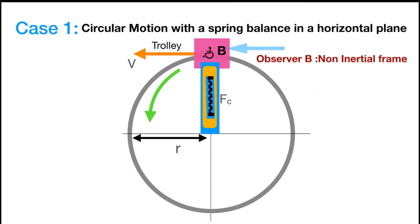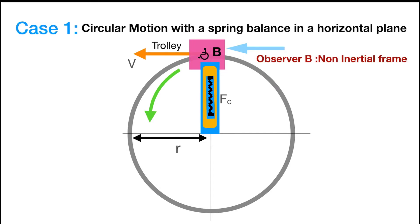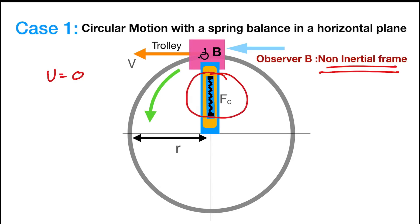Now let's understand the same motion from the perspective of observer B. Observer B is sitting inside the trolley and is also rotating with it, meaning he is under centripetal acceleration — he is in an accelerated frame, which is a non-inertial frame. From his perspective, he will see that the trolley is not moving, i.e., it is at rest. So if the trolley is not moving, the net force on it should be zero. But he observes the reading on the spring balance attached to the trolley showing 500 N, meaning there is a net force of 500 N acting towards the center of the circle.